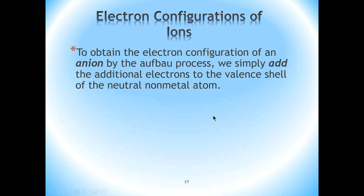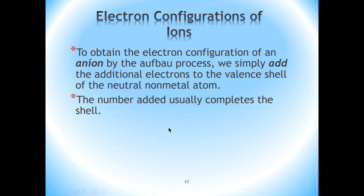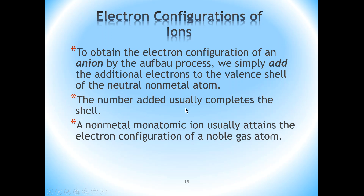Now we're going to get into the electron configurations of ions. To obtain electron configurations of anions, all we have to do is simply add the additional electrons to the valence shell of the neutral non-metallic atom. Usually, especially for the main group elements, this will complete the shell — the shell will end up with a full complement of electrons. The particular monatomic ion will usually end up with a noble gas configuration.